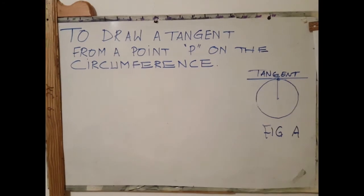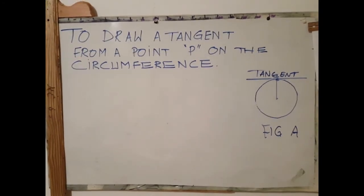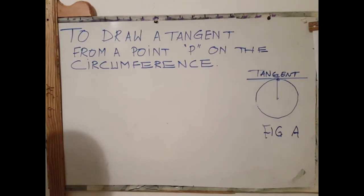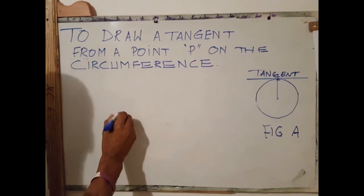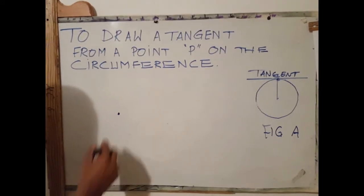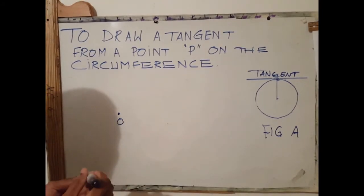Figure A shows a tangent that is being drawn at a point on a circle. The first step to draw a tangent from a point P on a circle is to draw the circle. I will label my circle center O.